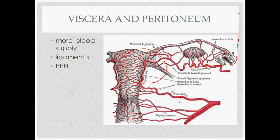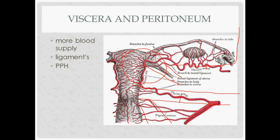Continuing with ligaments: the infundibulopelvic equals the suspensory ligament of the ovary and carries ovarian vessels. The cardinal ligament carries the uterine artery. The uterosacral ligament meets the cardinal ligament forming the uterosacral complex, traveling posterior-inferiorly to the ischial spine. The round ligament carries Sampson's artery — a good PIMQ question — and goes as a remnant of the gubernaculum to the mons pubis.